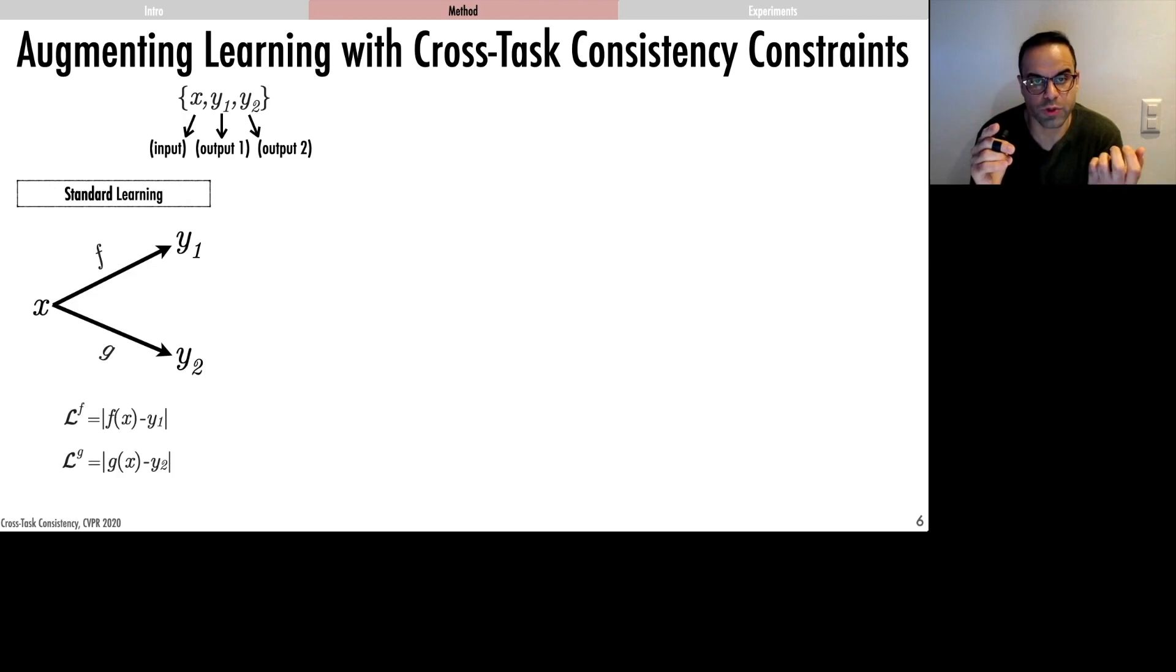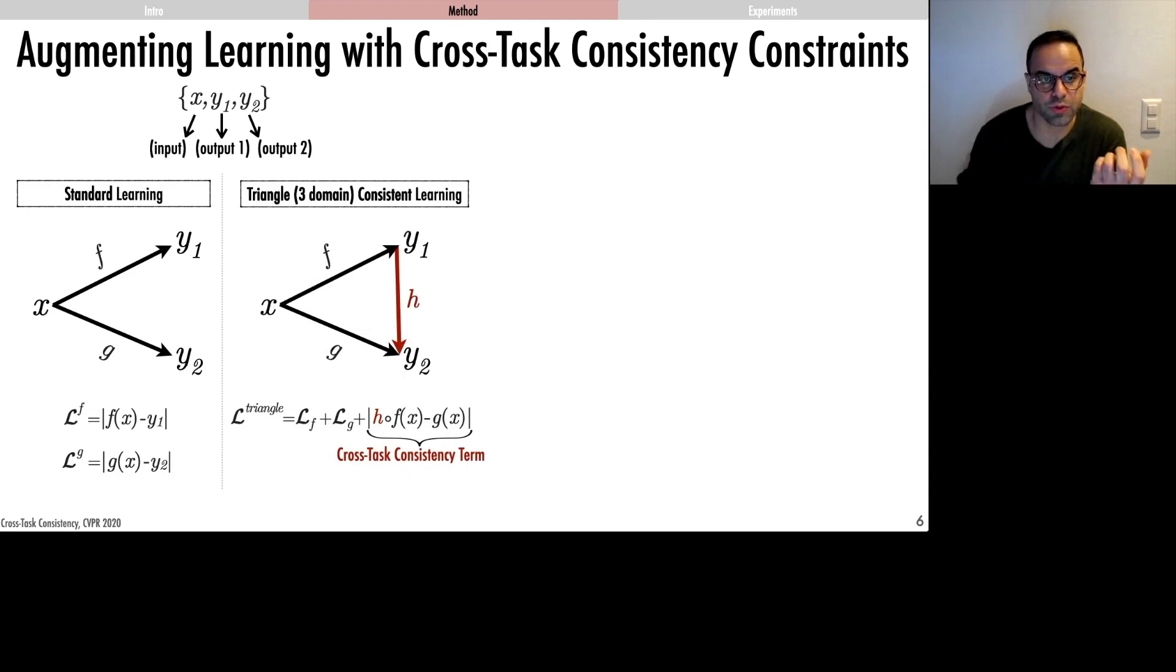We introduce an additional constraint to this objective, here shown using the function H. This is a cross-task function that relates domain Y1 and Y2 and cross-checks them against each other. This way learning Y1 and Y2 are not independent anymore. These cross-task functions are neural networks themselves and they automatically learn from the data.